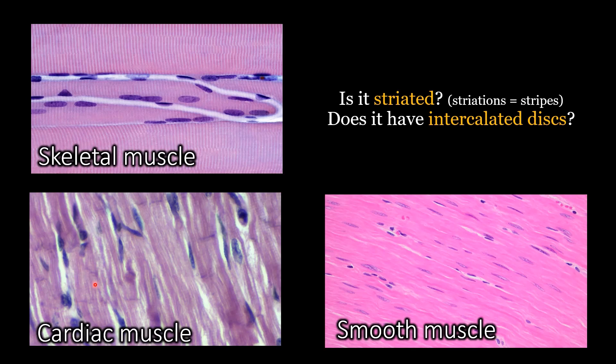Smooth muscle does not have any striations at all. It doesn't have intercalated discs, and that's what is going to help you identify it as smooth.